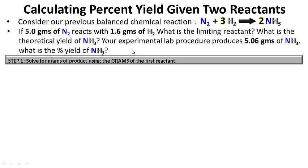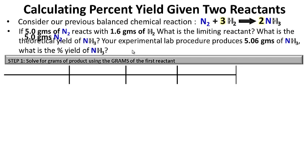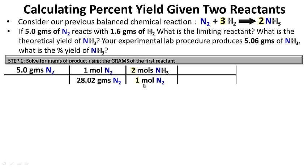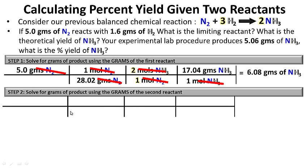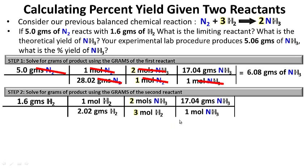Step one: solve for grams of product using the first reactant. Starting with 5 grams of N2: (5 g N2) × (1 mol N2 / 28.02 g N2) × (2 mol NH3 / 1 mol N2) × (17.04 g NH3 / 1 mol NH3) = 6.08 grams of NH3. Step two: use the second reactant — 1.6 grams of H2: (1.6 g H2) × (1 mol H2 / 2.02 g H2) × (2 mol NH3 / 3 mol H2) × (17.04 g NH3 / 1 mol NH3) = 8.99 grams of NH3.